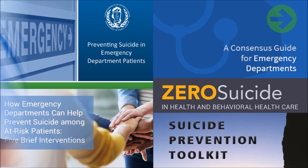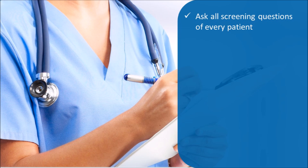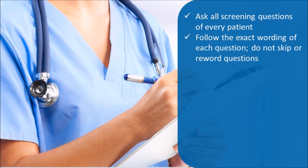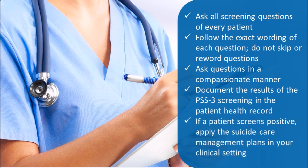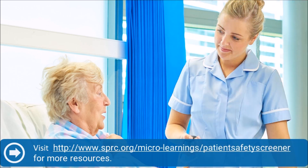Remember, when using the PSS-3 screener: ask all screening questions of every patient, regardless of their presenting complaint or clinical appearance. Follow the exact wording of each question — do not skip or reword questions. Ask questions in a compassionate manner and show interest in the patient's answers. Document the results of the PSS-3 screening in the patient health record. If a patient screens positive, apply the patient practices that are consistent with the suicide care management plans in your clinical setting. Screening alone without appropriate intervention is not an effective way of preventing suicide. Visit the Suicide Prevention Resource Center's website at www.sprc.org/micro-learnings/patient-safety-screener to view a list of all the resources mentioned in this presentation.